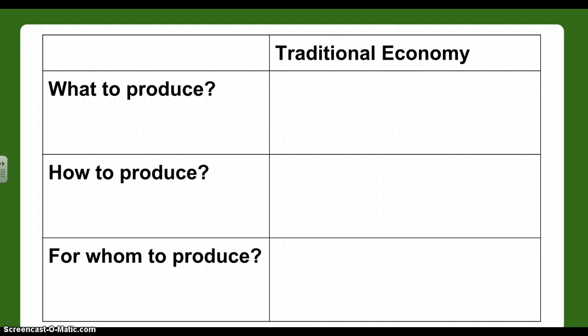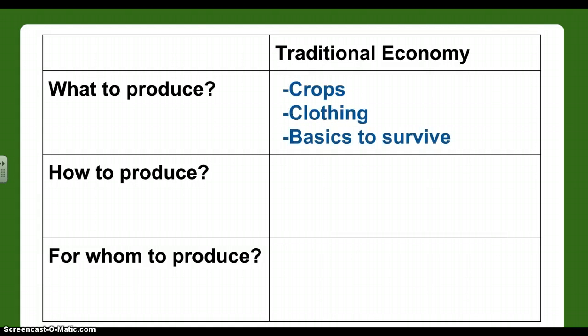For the traditional economy, what we're producing is basically crops, clothing — the basics to survive — like pottery to store food, tools to cook or hunt food. It's basically just the bare minimum. We're not going for an iPod or iPhone; it's just about what is really needed to survive.